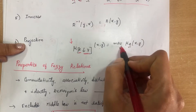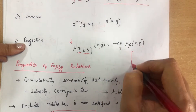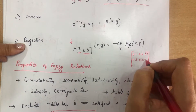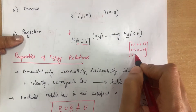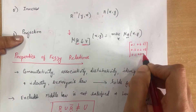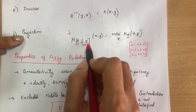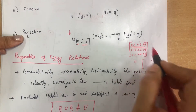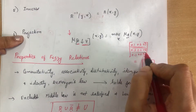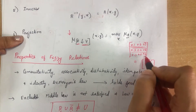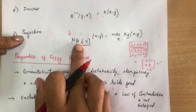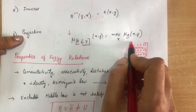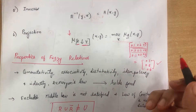For example, if you have values 0.1, 0.6, 0.7, 0.3, 0.2, 0.8, and 0.3, 0.4, 0.6 in the matrix, the projection of R onto Y means finding the maximum along each column. The max of the first column is 0.7, the second column 0.8, and from the remaining column 0.6. These are the operations you can perform on fuzzy relations.